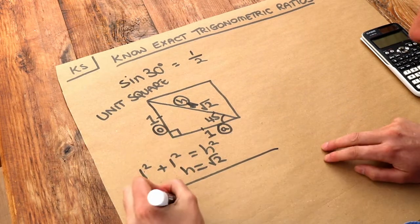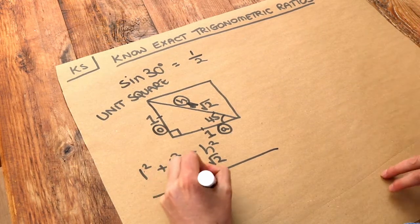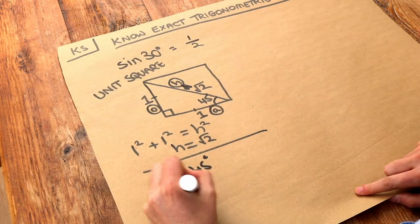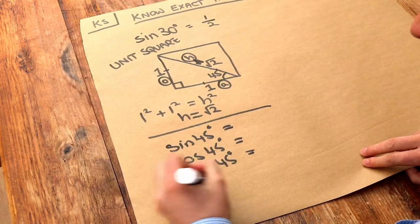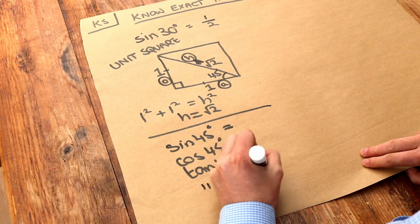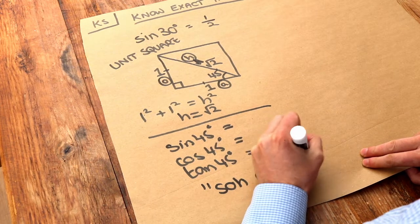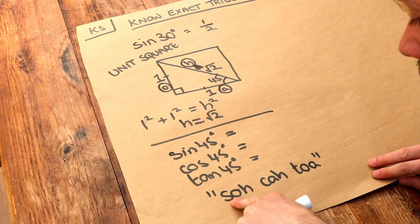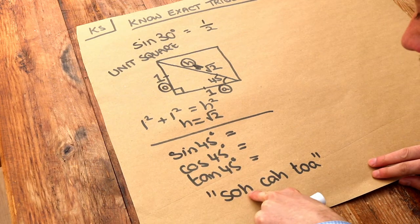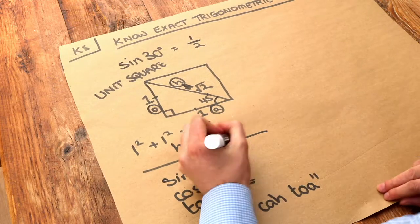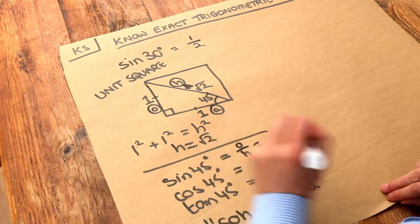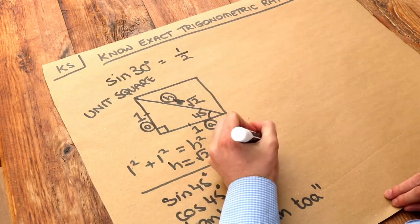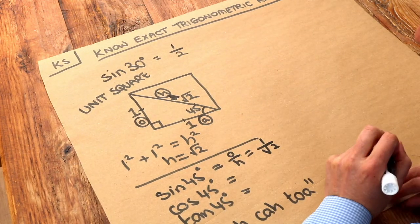Now let's use these to work out sine of 45. If we think back to SOHCAHTOA, when we learned about trigonometry, sine of 45 involves opposite over hypotenuse, so it's 1 over root 2. So sine of 45 is 1 over root 2.